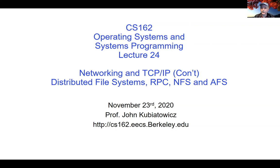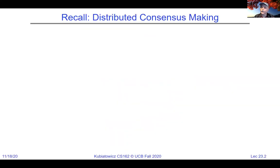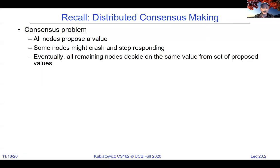I'd like to pick up where we left off. We were talking about extending operating systems out to the network as a whole, including the distributed consensus-making idea. That's basically a situation where you have several different nodes spread throughout the network — they all propose a value. Some nodes might crash or stop responding, but eventually all the nodes decide on the same value from some set of proposed values. That's the general consensus problem.